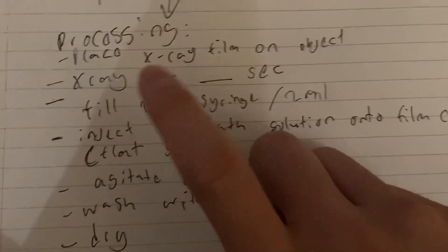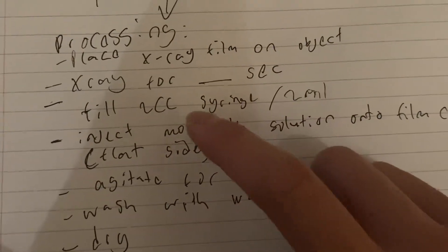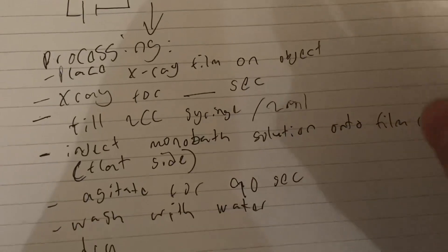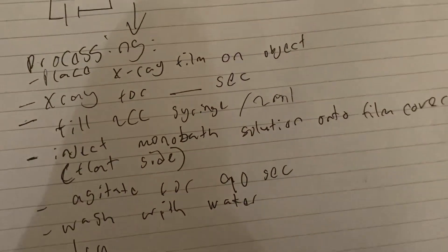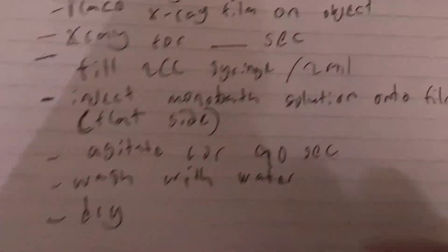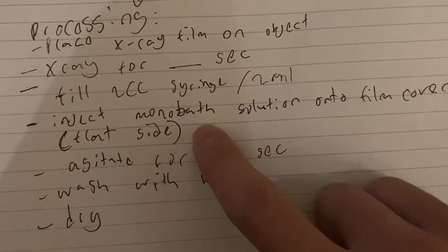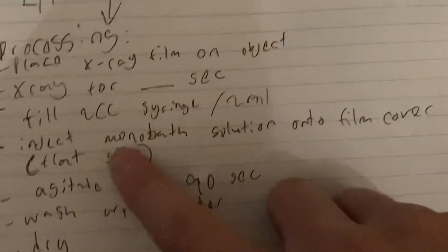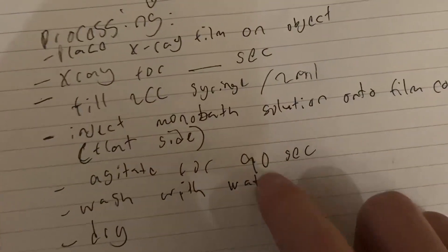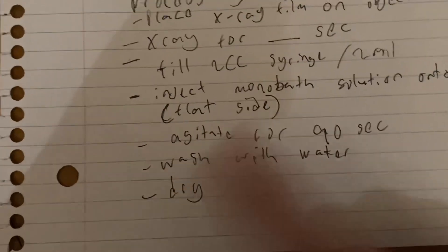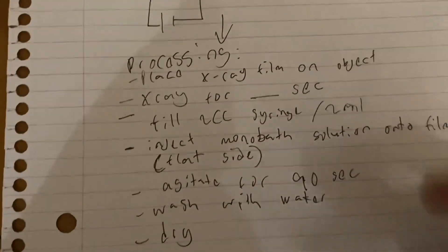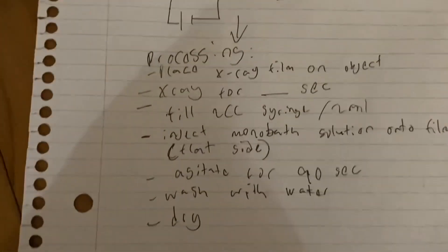Then I fill my two CC syringe—well, I actually use three CCs but I fill it to two milliliters of the monobath developer. I then inject the film after I've X-rayed it and I agitate it for 90 seconds. I clean it with water and I dry it using a blower. You can just let it dry naturally, but if you want it quicker you can dry using a blower or similar. That's the process for developing your films.